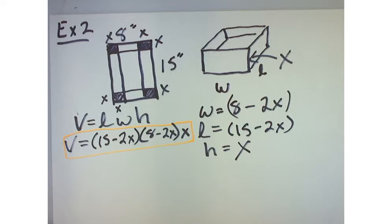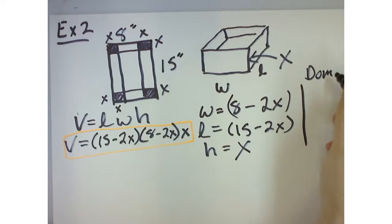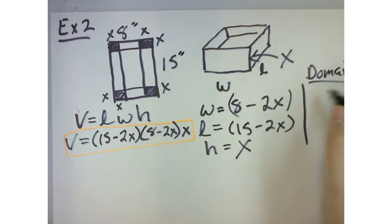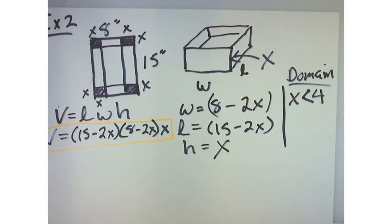Part B says find the domain of x. Are there any restrictions as to what x can or cannot be? Remember that domain says it's all the possible x's. What can x not be? Well, I'll tell you what the domain is, and then you tell me how I came up with that answer.